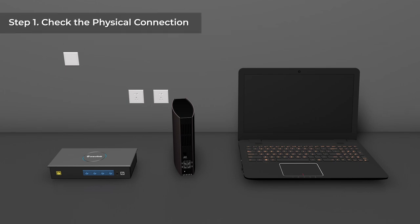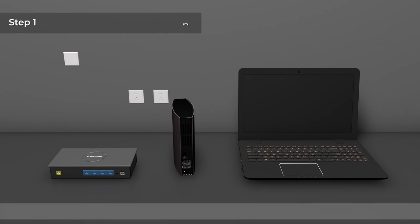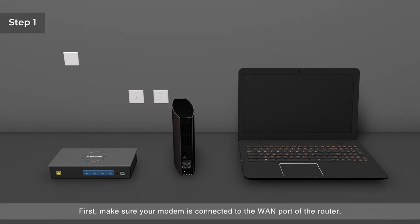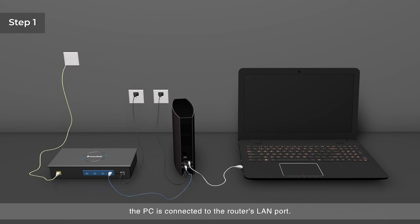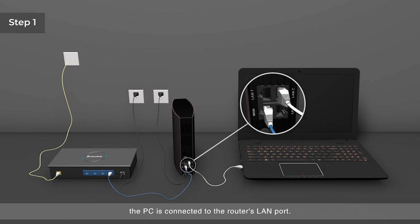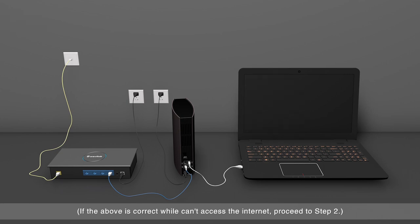Step 1: Check the physical connection. First, make sure your modem is connected to the WAN port of the router, and the PC is connected to the router's LAN port. If the above is correct but you still can't access the Internet, proceed to Step 2.